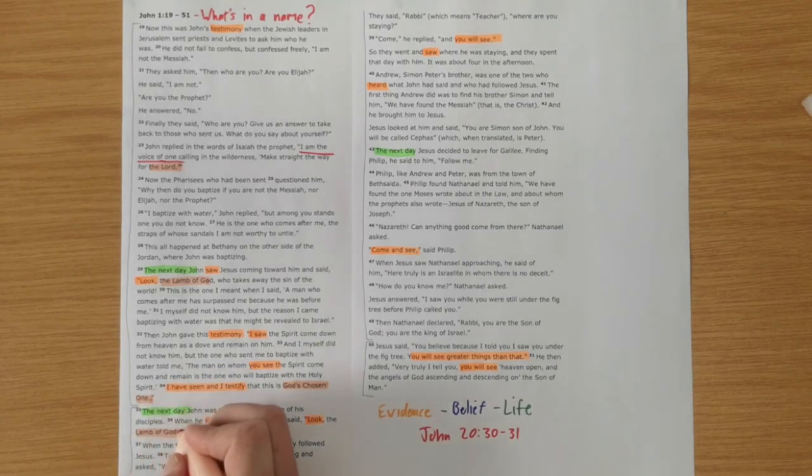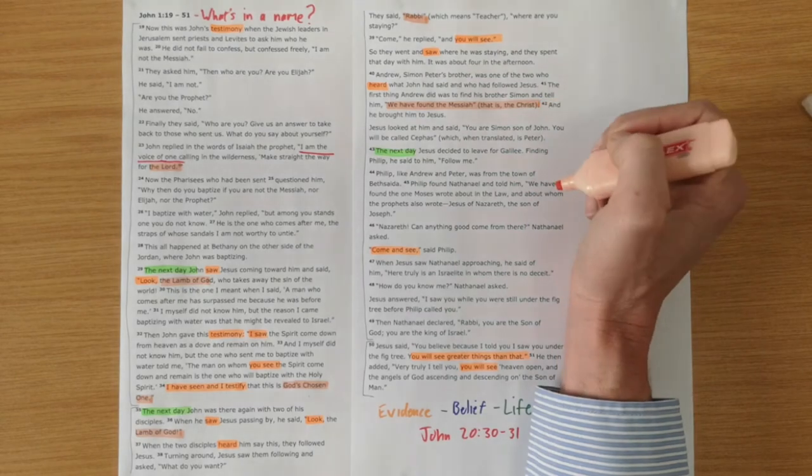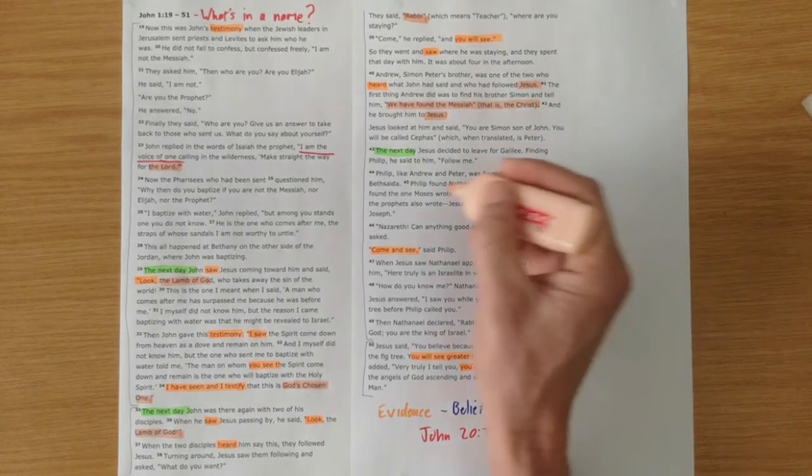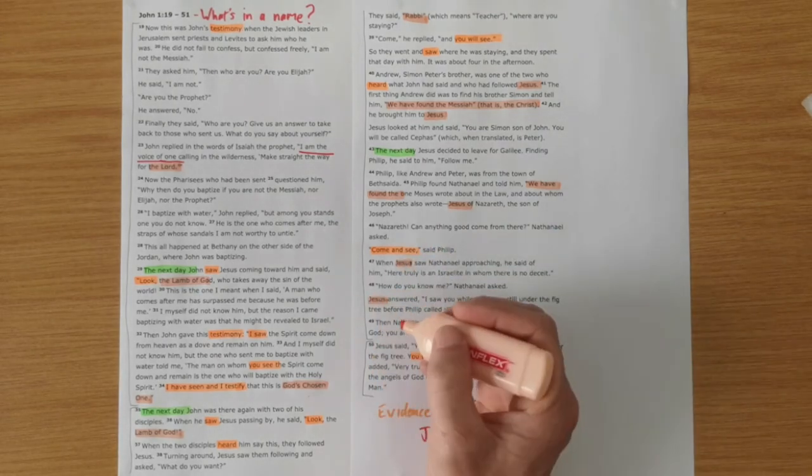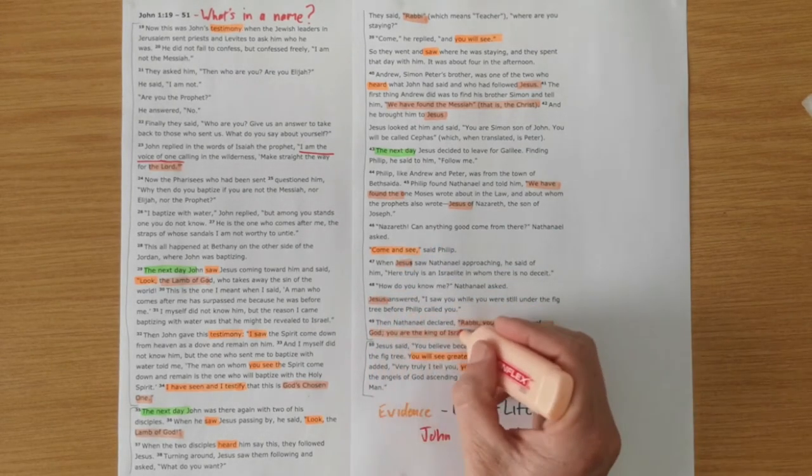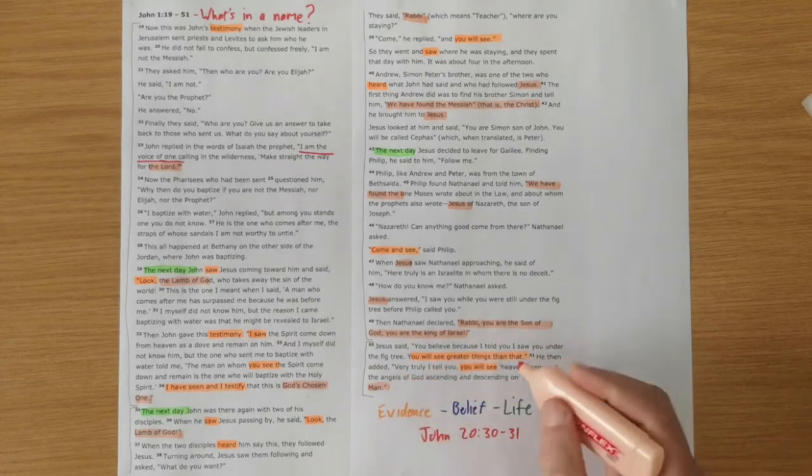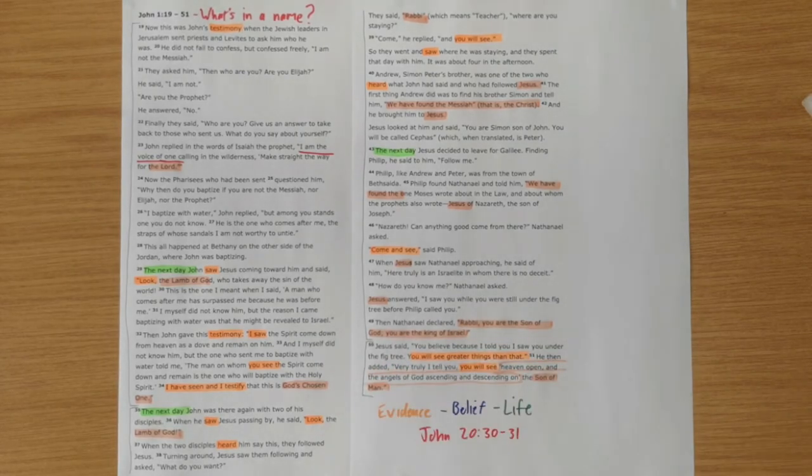So what's in a name? Throughout this section we see some key names being given to Jesus. He is the Lord, the Lamb of God, God's chosen one, again the Lamb of God is called Rabbi, Andrew tells his brother Simon we have found the Messiah, the Christ. We see people following Jesus. Philip says we have found the one that Moses wrote about—Jesus of Nazareth, the son of Joseph. Then Nathaniel says, Rabbi, you are the Son of God, the King of Israel. Jesus calls himself the Son of Man, and then there is an allusion to another Old Testament story here which we'll look at in a moment.